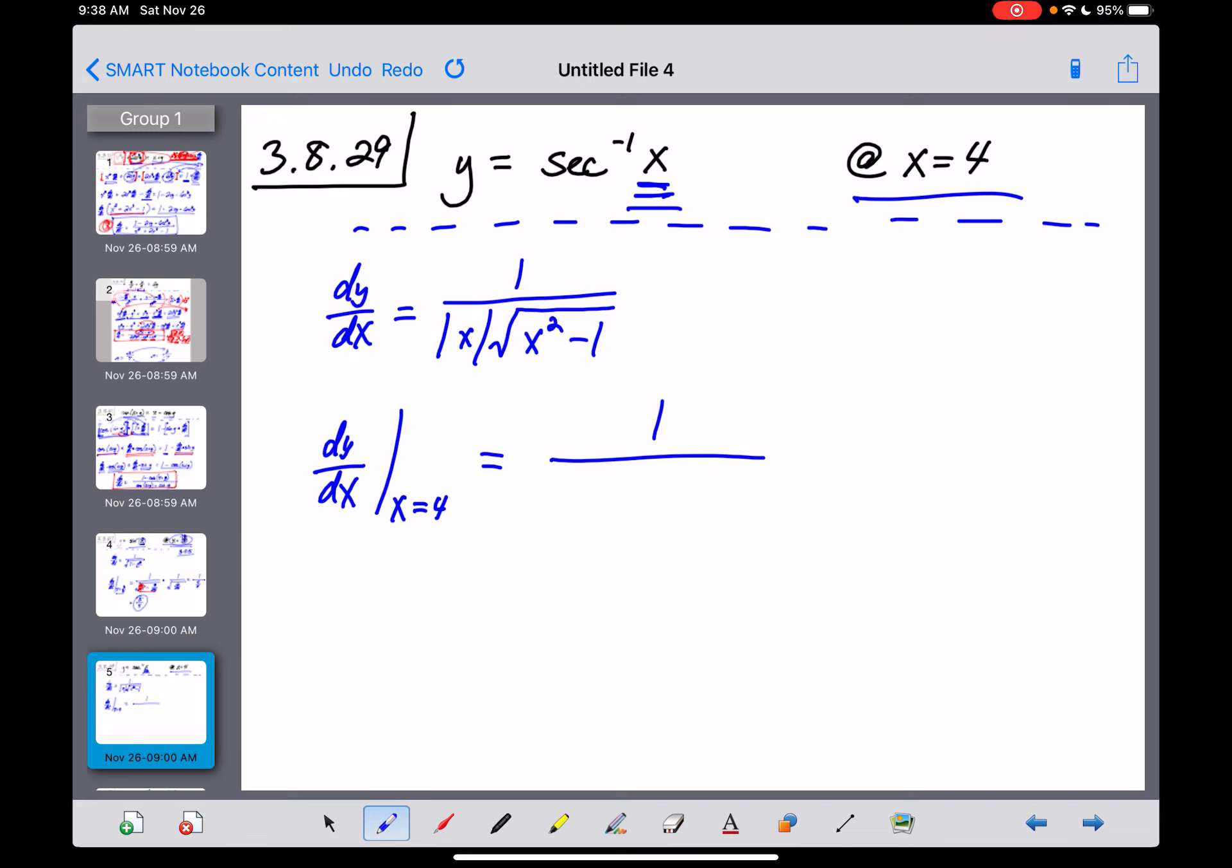We've got 1 over, now we have an absolute value of 4 in front, and let's go ahead and do that. The absolute value of 4 is just 4, so there's no need to keep that absolute value there. Times the square root of, this becomes 4 squared, 16 minus 1, and that's root 15 right there.